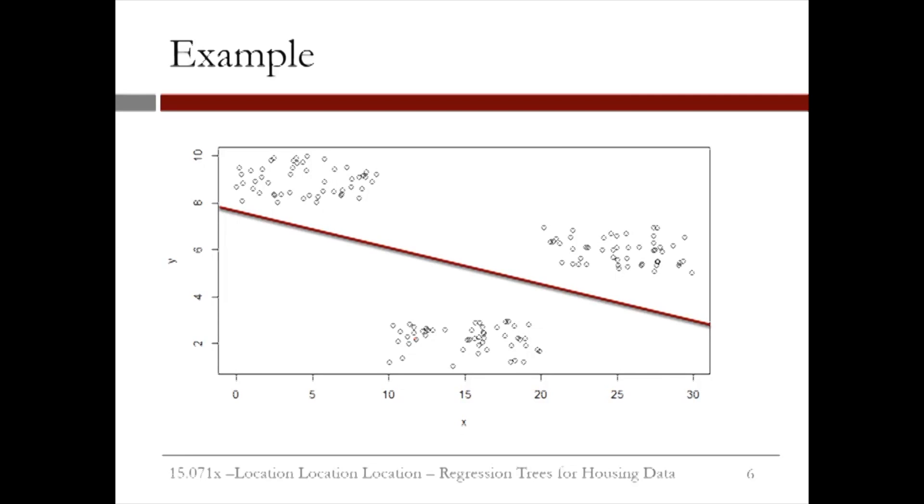However, we can notice that the data lies in three different groups. If we draw these lines here, we see x is either less than 10, between 10 and 20, or greater than 20, and there is very different behavior in each group.